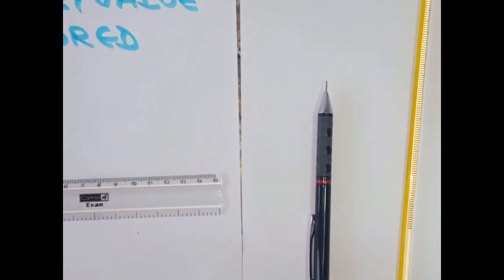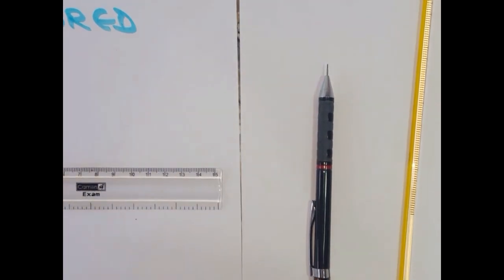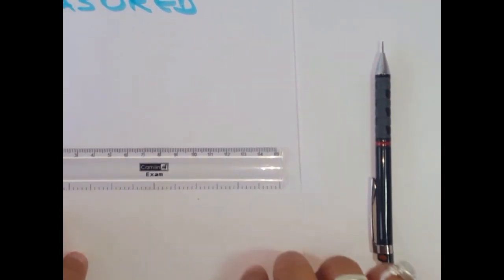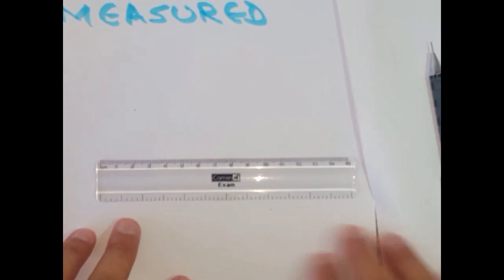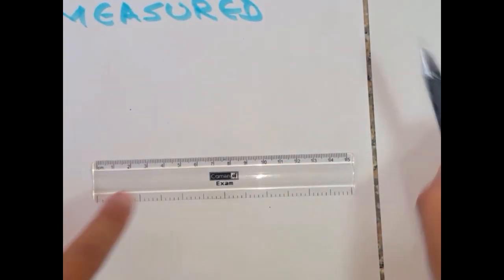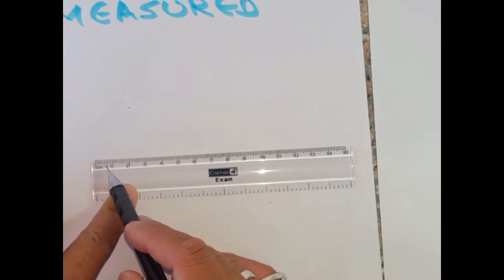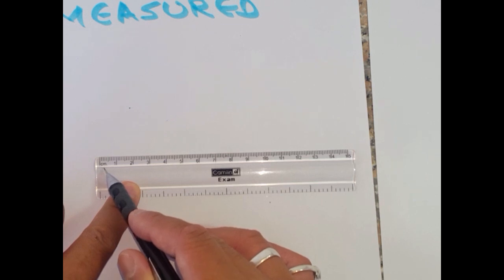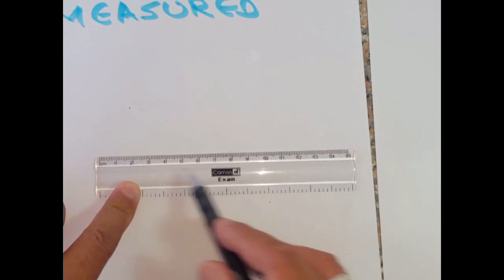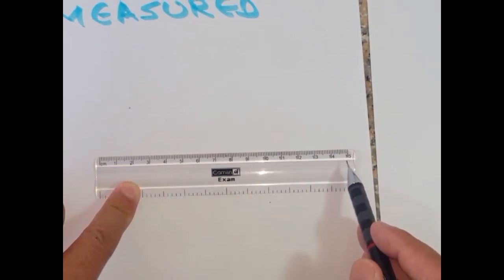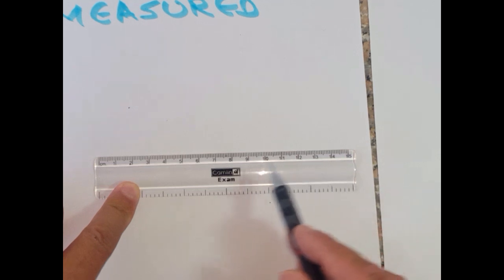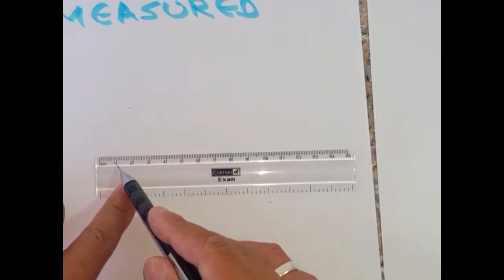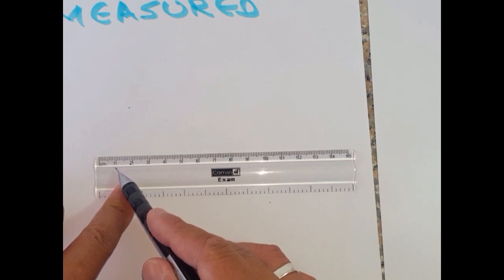Let's zoom in and find out about this scale. Now looking at this scale, you can see it has many graduations and it measures length in centimeters. The total length it can measure is a maximum of 15 centimeters. But what is the smallest value it can measure? Is it one centimeter, or can it measure even less than one centimeter?